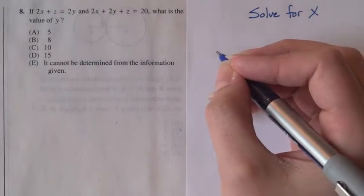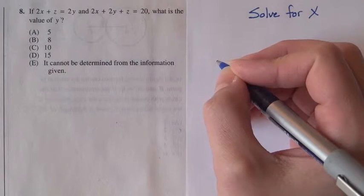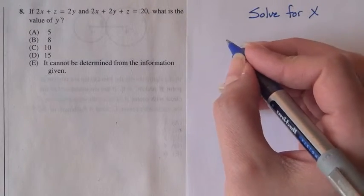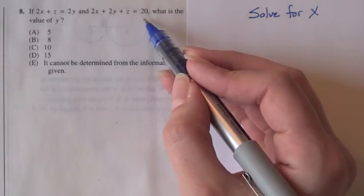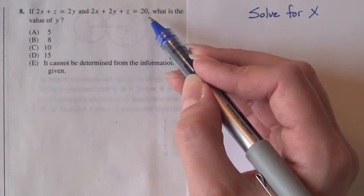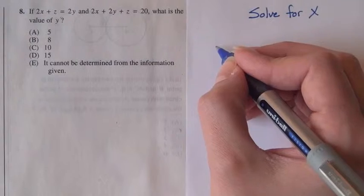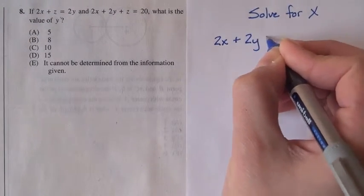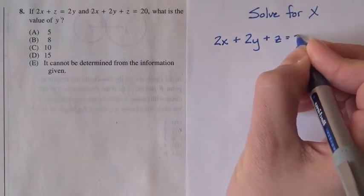So in order to set up our system of linear equations, let's line up the equations in a way that makes sense with all the variables on one side. I'll start with the second equation since this already looks nice, x, y, and z lined up on one side and a number on the other side of the equal sign. So I have 2x plus 2y plus z equals 20.